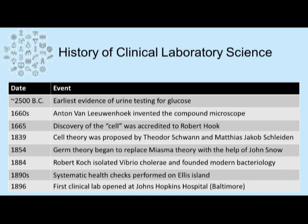Jumping forward a few hundred years to 1839, two scientists by the name of Theodor Schwann and Mathis Jakob Schleiden proposed three rules of cell theory. First, all organisms are composed of one or more cells. Two, the cell is the basic structure and organization of an organism. And three, all cells come from pre-existing cells.